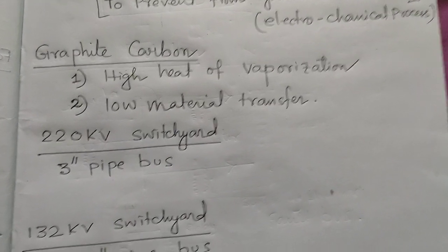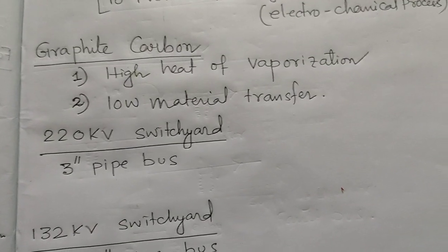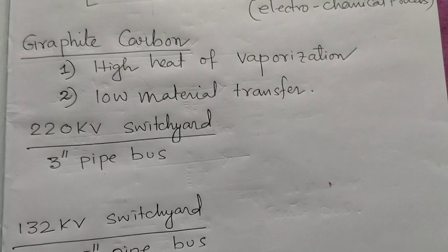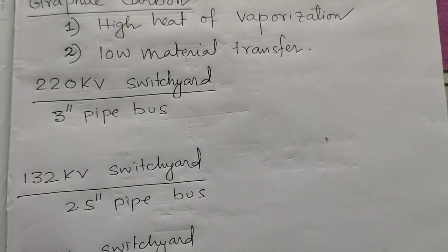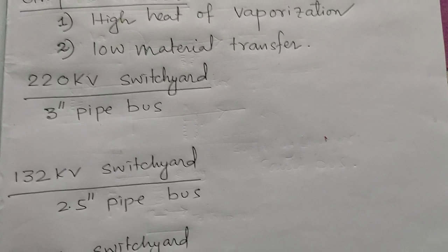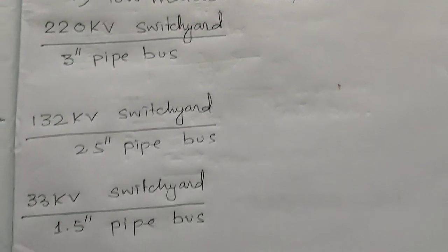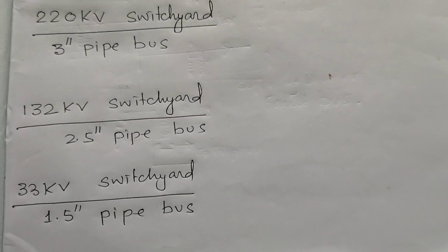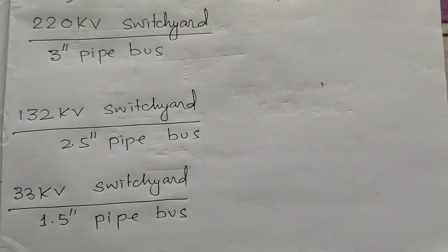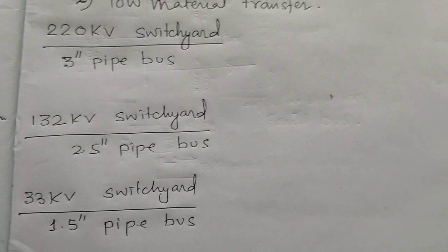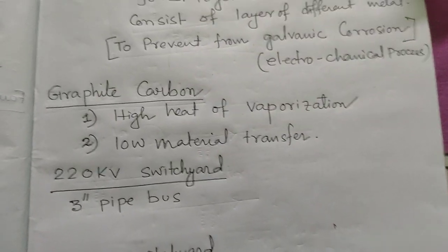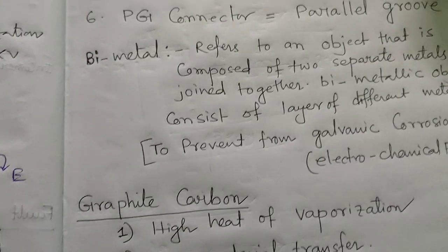In 220 kV switchyards, three-inch pipe buses are generally used. In 132 kV switchyards, two-and-a-half-inch pipe buses are used nowadays. In 33 kV switchyards, one-and-a-half-inch pipe buses are used. We have attached some pictures related to various connectors with their names.